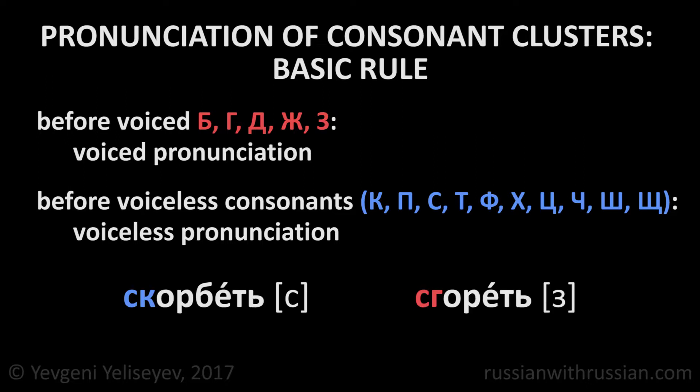Скорбеть. Сгореть. In the first case, we pronounce a voiceless sound because the S is followed by the voiceless sound К — скорбеть. In the second word, the S is followed by the voiced sound Г, that's why it specifies the voiced sound З — сгореть.